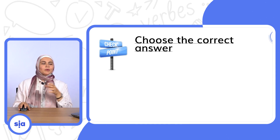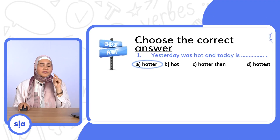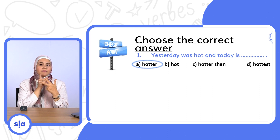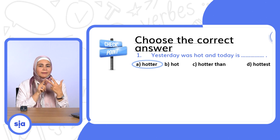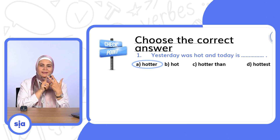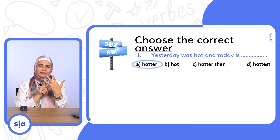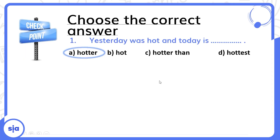Now let's read some questions — هتوقف الفيديو وتجاوب وبعدين تشوف إجابتك. Number one: Yesterday was hot and today is — hotter. خلي بالك: hot is a CVC adjective — consonant, vowel, consonant. لما الاداجكتف فيها حرف ساكن ثم متحرك ثم ساكن، بعمل double للآخر حرف — hot → hotter, اتنين T وبعد كده ER.